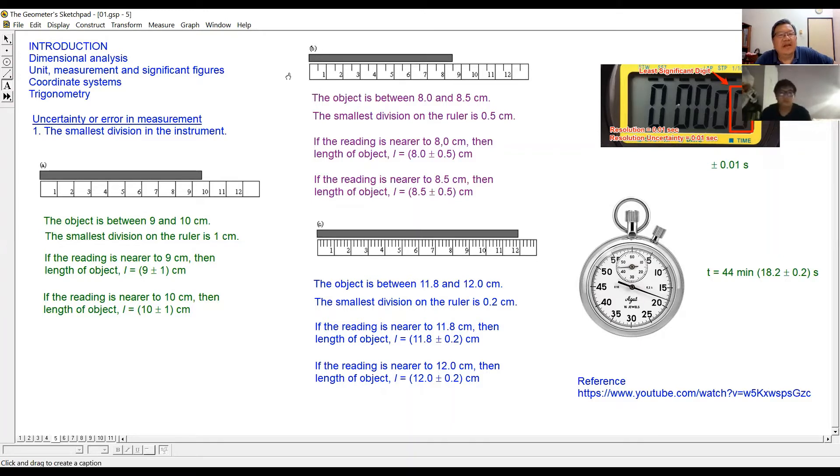Can you tell me what is the reading for B? 8.5. This one is 8.5, so you can say 8 or 8.5. What's the smallest division here? How many? The smallest division here, how much? 0.5. Correct, is 0.5.